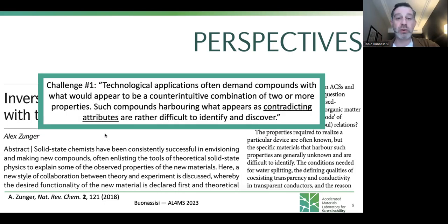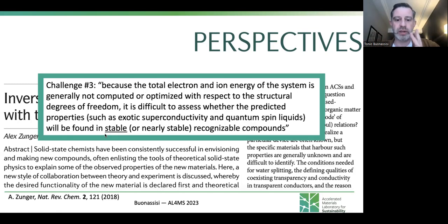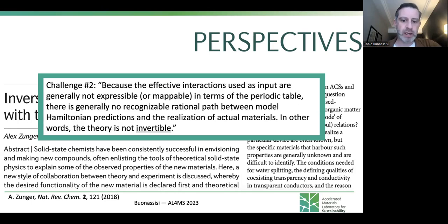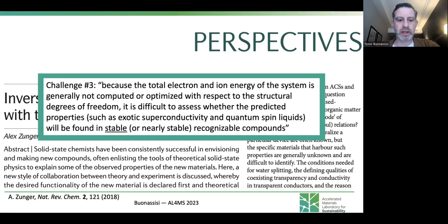Challenges one, two, and three to bear in mind: rare and contradicting attributes, invertible crystallographic representation, and stability. From a machine learning language, rare and contradicting attributes basically refers to class imbalance — you have a rare set of good candidates you're trying to learn from and a large number of bad candidates for a given application. Invertibility has to do with inputs, zero padding, and extracting information. Stability is what we typically refer to as refinements — pruning compounds that are not going to be worthwhile.